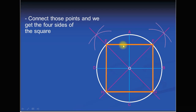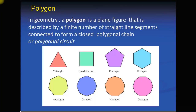Dear students, in this video lecture we have discussed how to draw polygons like a triangle and square. In the next lecture, we will discuss other types of polygons — pentagon, hexagon, heptagon, octagon, nonagon, and decagon. This is the end of this segment. Thank you. Allah Hafiz.